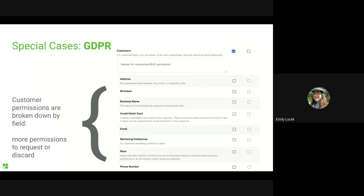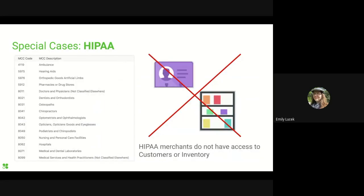This means that apps offered in Europe need to make additional considerations over which permissions they need and whether they can minimize the requested data across a whole new set of permissions. Apps with a customer focus may need to be particularly choosy about the exact information they'll touch on. Another special case is the Health Insurance Portability and Accountability Act — HIPAA — which enforces restrictions on sharing personal healthcare data. In Clover terms, this means that certain types of merchants, based on their merchant category code or MCC, cannot access apps that request inventory or customer permissions. If your app is targeting a healthcare vertical, keep in mind that you will be unable to utilize these permissions.